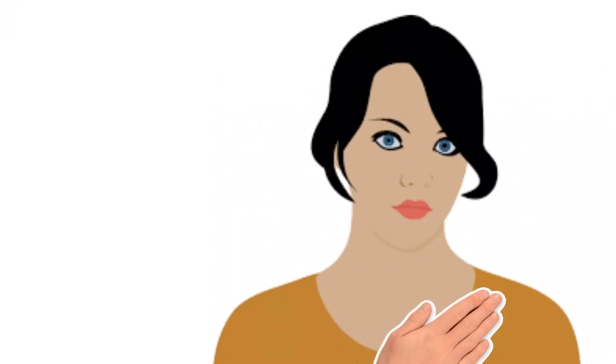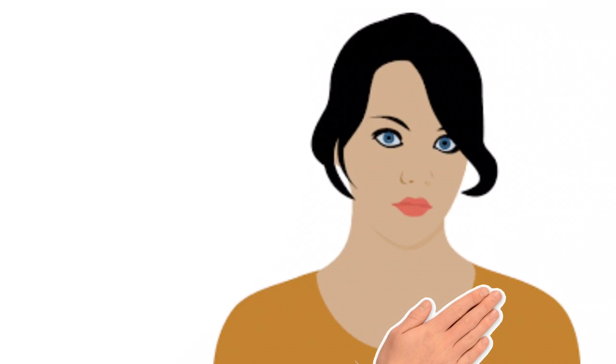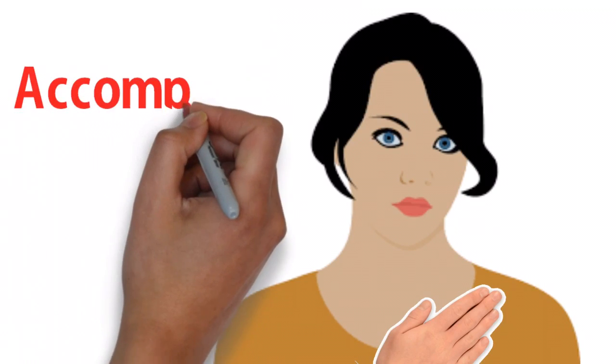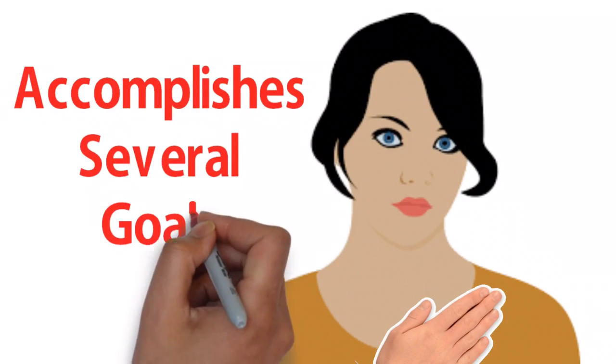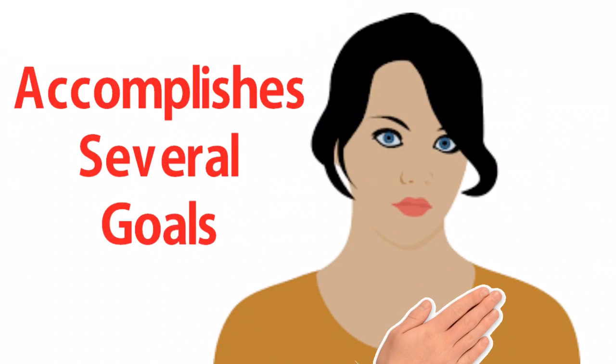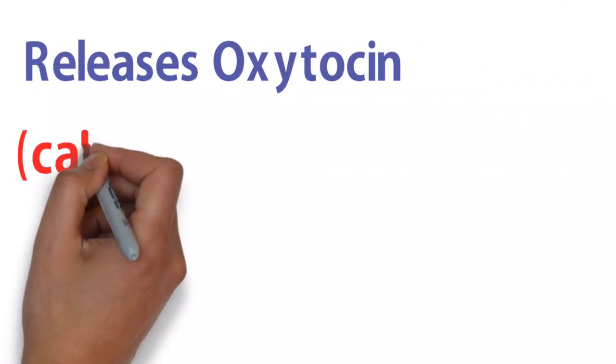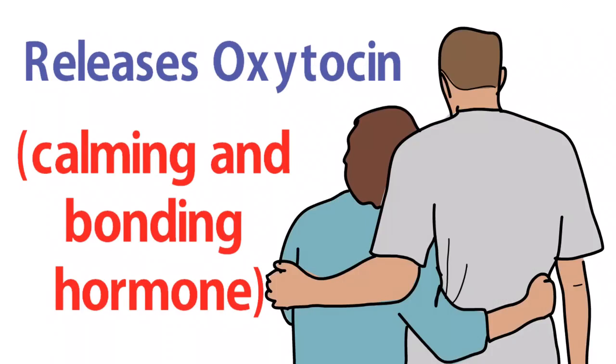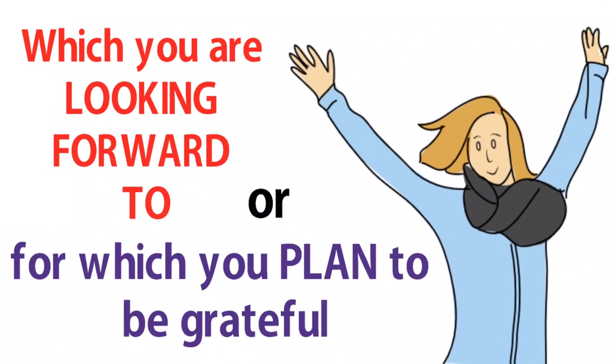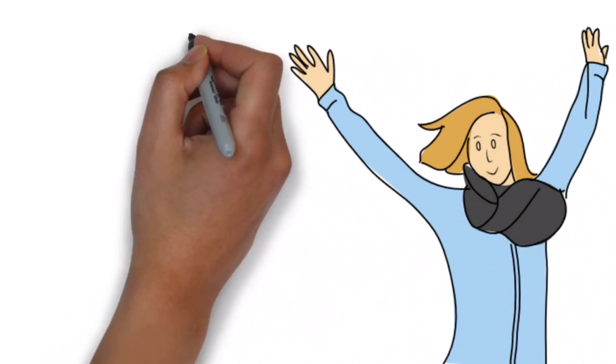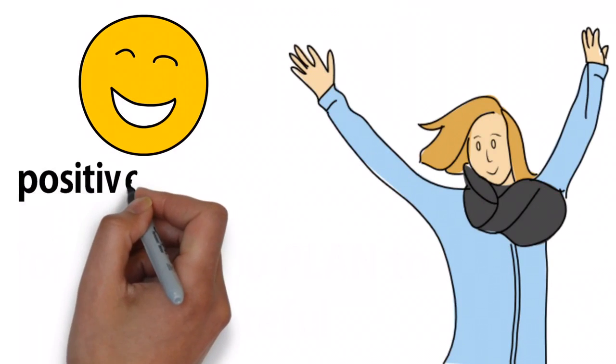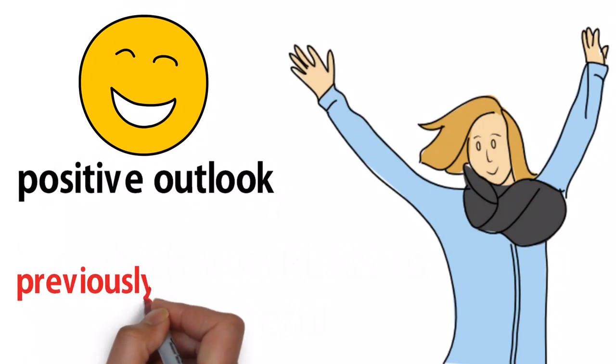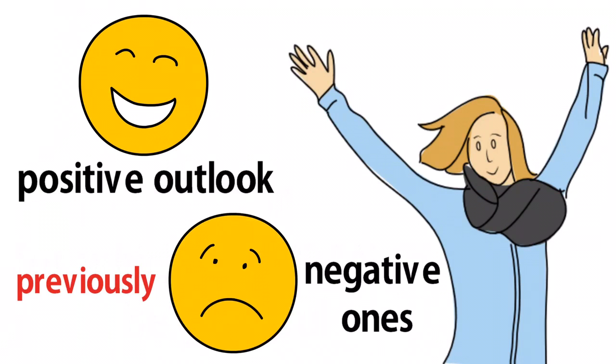Finally, putting your right paw over your heart accomplishes several goals. First, putting your hand in this position releases oxytocin, the calming and bonding hormone. Secondly, you are stating a thing that you are planning to go well. In other words, you are taking a positive outlook when you could previously only come up with negative ones.